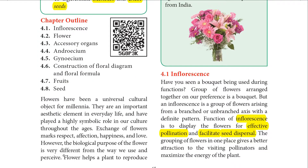Have you seen a bouquet? A bouquet will have a group of flowers arranged according to our preference. But what is an inflorescence? Inflorescence is a group of flowers arising from a branched or unbranched axis of the plant, with the flowers arranged in a definite pattern. The inflorescence helps to display the flowers for effective pollination and facilitates seed dispersal. Grouping of flowers in one place gives a better attraction for visiting pollinating organisms.